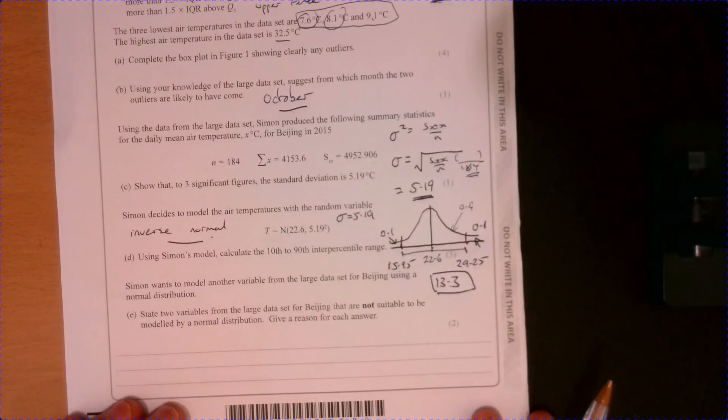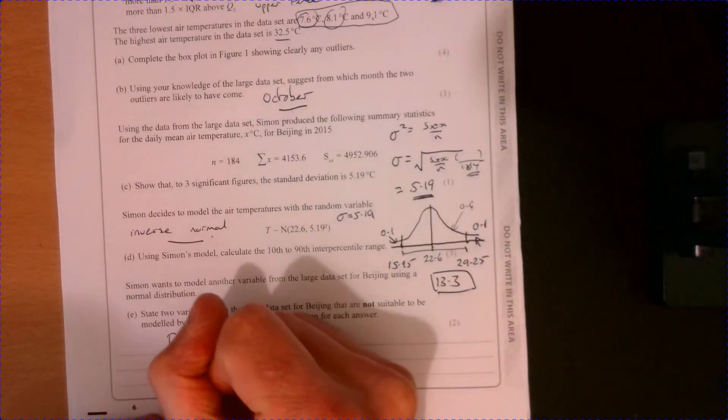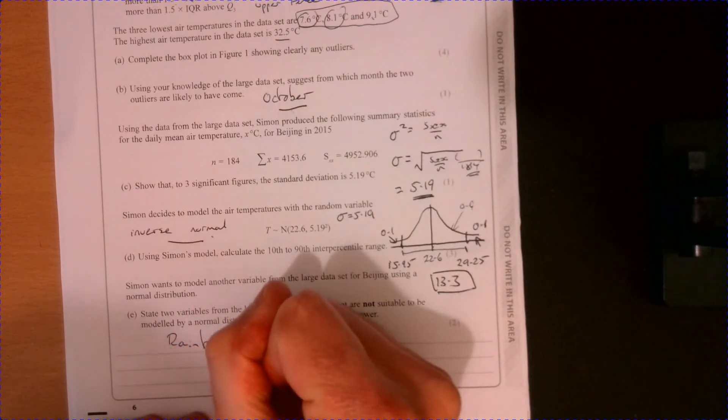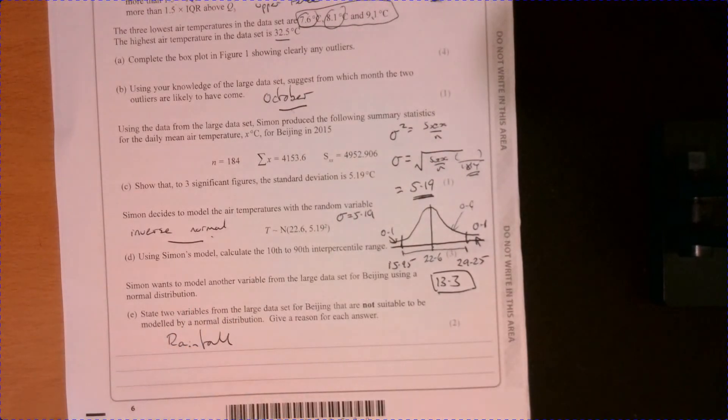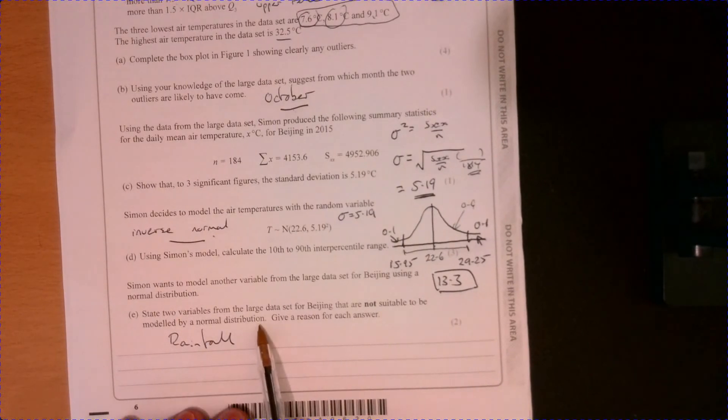Right, part E. So again, we need knowledge of the data set. We need to know what sort of things are in the data set. So there are a number of other possible answers, but for me, the most obvious answers are rainfall. These are things that are not going to follow, not be modeled by a normal distribution. Rainfall.